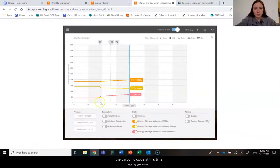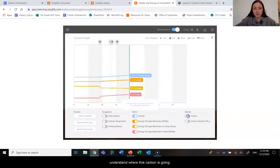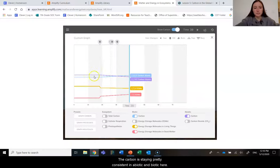I really want to understand where this carbon is going. So, actually, I will turn this carbon on, and I'm going to also turn this on. So, the carbon is staying pretty consistent in abiotic and biotic here. I see when I killed the decomposers, I'm starting to see a decline in the amount of carbon dioxide, which we already know occurred.